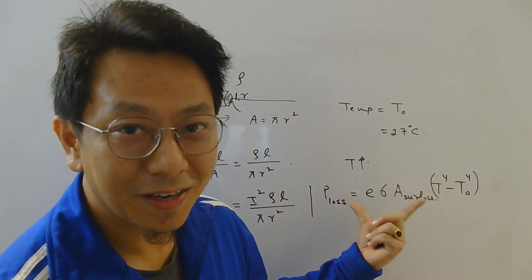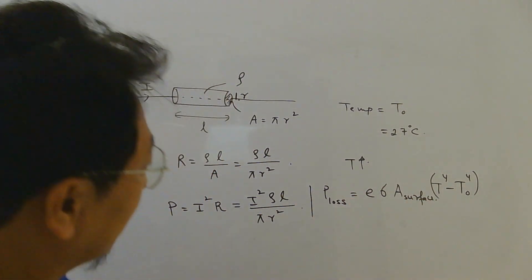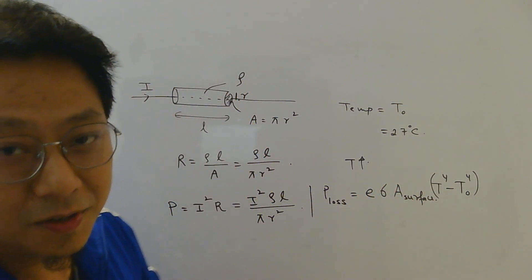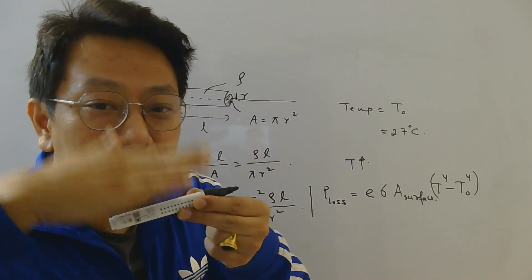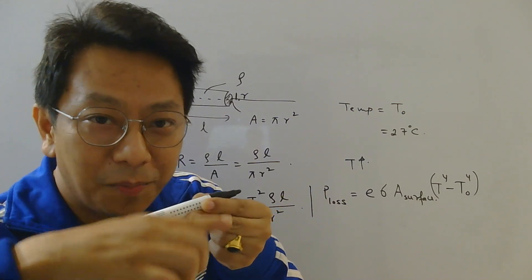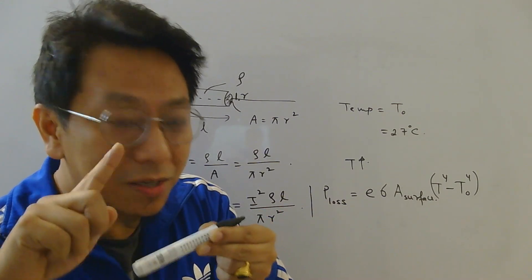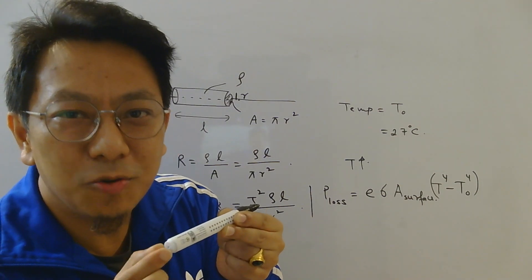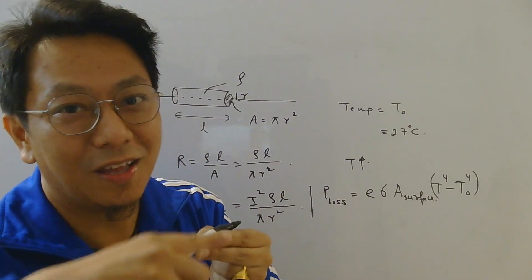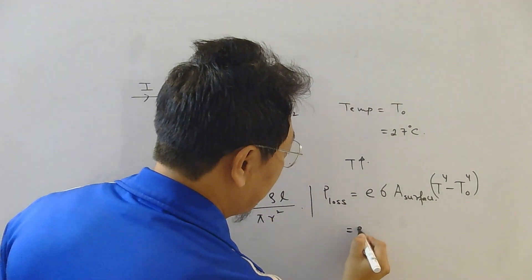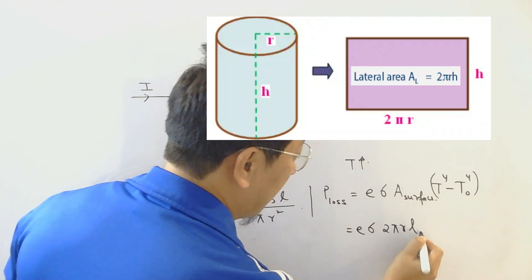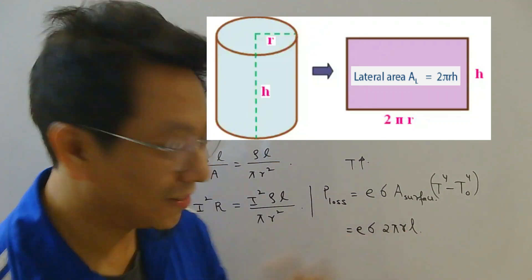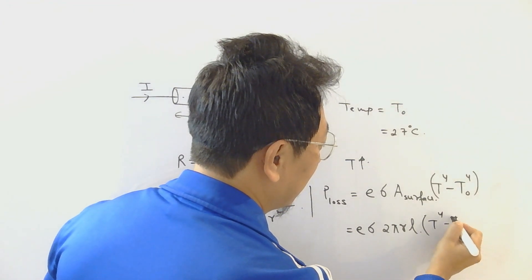One thing you have to be careful about: the area of the surface should not be confused with the area of cross section. The heat will be radiated from the surface, and since the cross-sectional end areas are very small compared to the lateral surface, we consider only the lateral or curved surface area. This area of the surface can be written as 2πRL. So the radiation power loss formula becomes: emissivity × Stefan's constant × 2πRL × (T⁴ − T₀⁴).